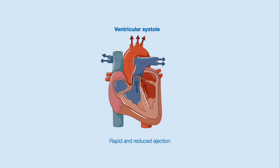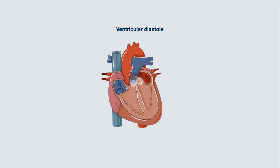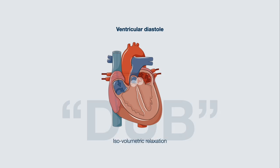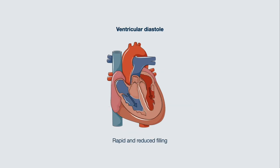With ventricular contraction, blood is ejected into the large vessels, causing a rise in their pressures, which become greater than that of the ventricles, causing closure of the semilunar valves and the S2 — dub. This is followed by isovolumetric ventricular relaxation, and simultaneously the atria fill with blood, increasing atrial pressures. As atrial pressures rise above ventricular pressures, the AV valves open, allowing for passive filling of the ventricles, and the cardiac cycle starts again.